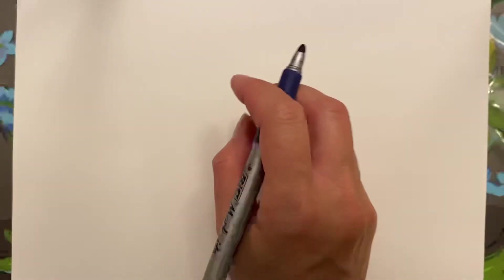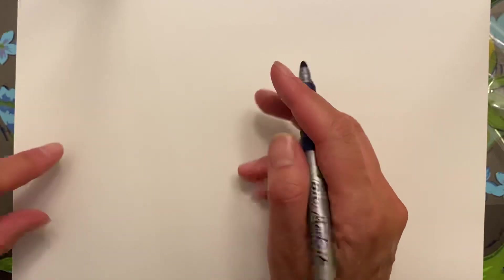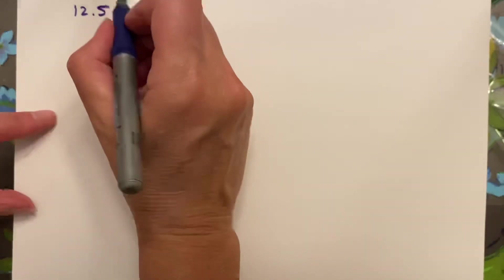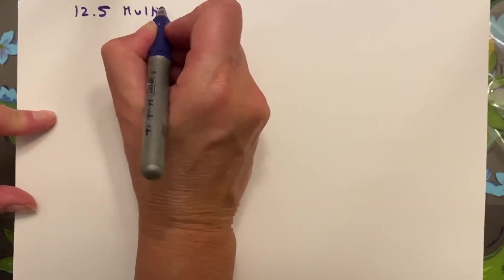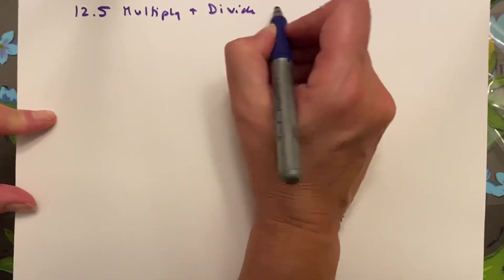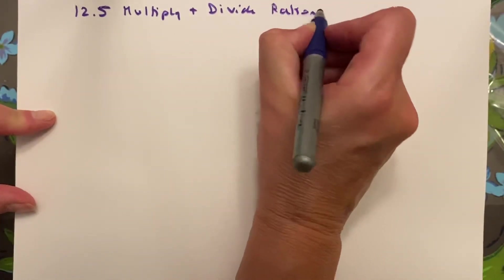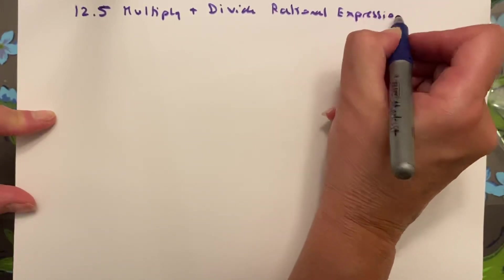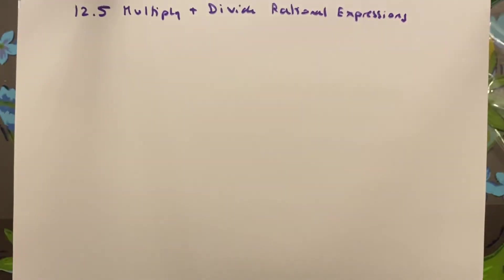Okay guys, I must be nearing the end of the year - I'm having to use my thick markers again because I'm running out of ink. Alright, 12.5 we're going to multiply and divide rational expressions and we're going to start with multiplication.